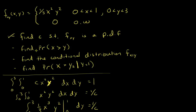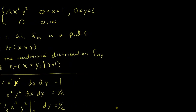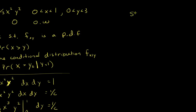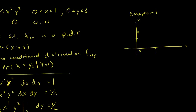So now let's find the probability that x is greater than y. A great way to start all these joint distribution problems is by drawing out your support. So I have x and y — x goes from 0 to 1, y goes from 0 to 3. My support is this rectangle.